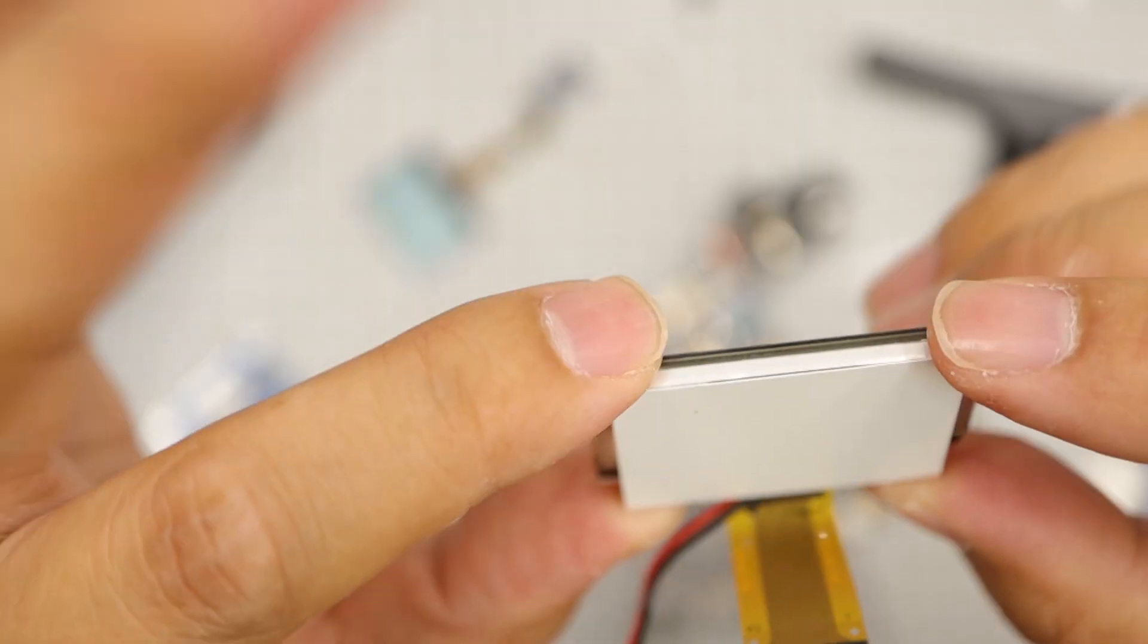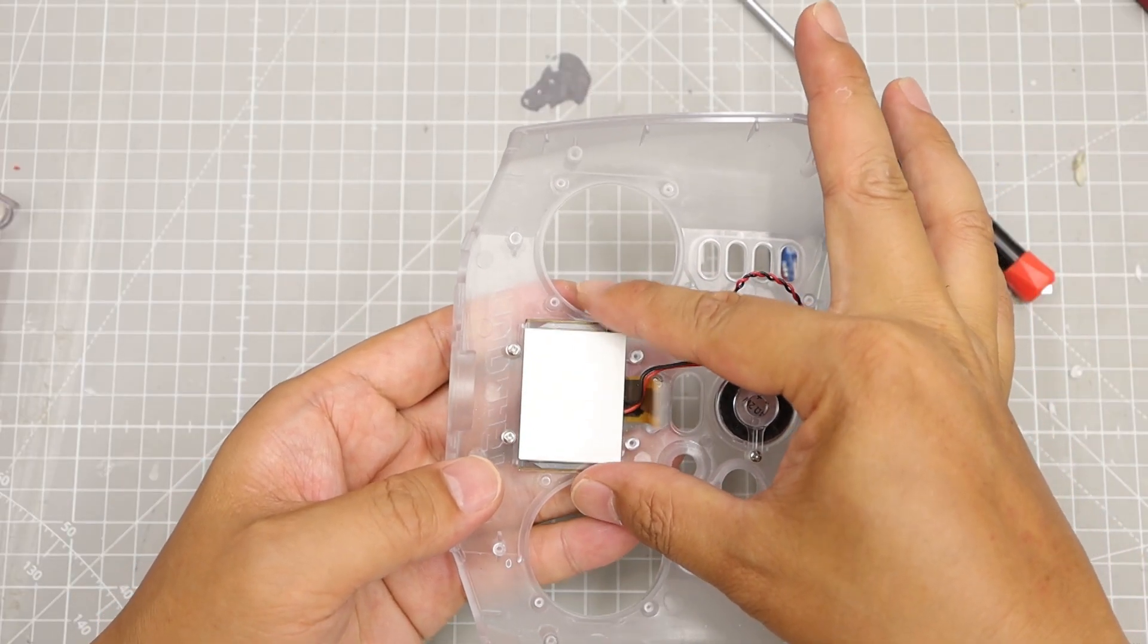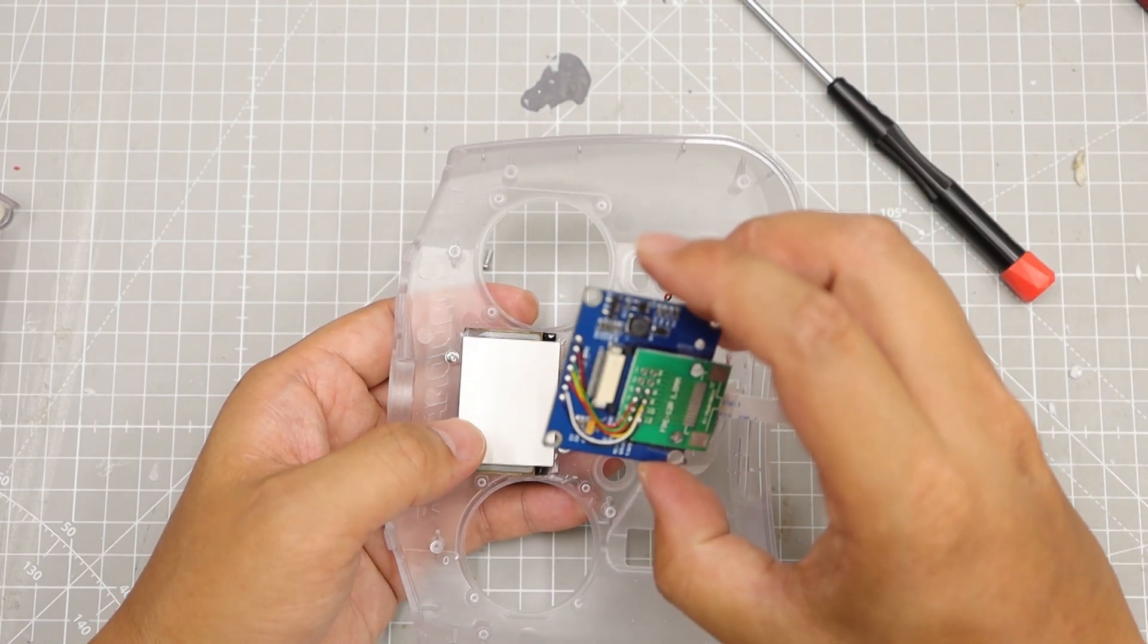So, glue the backlight to the OLED glass. Attach PCB and adapter board. And lay the wire in. Assembled part is like this.